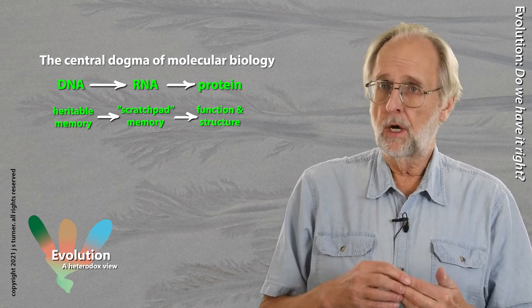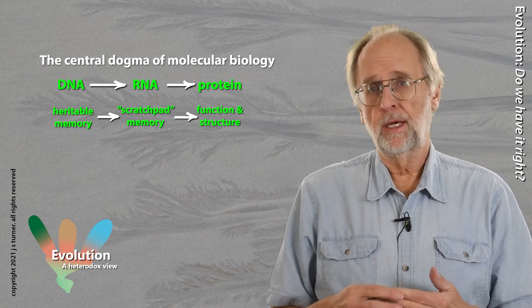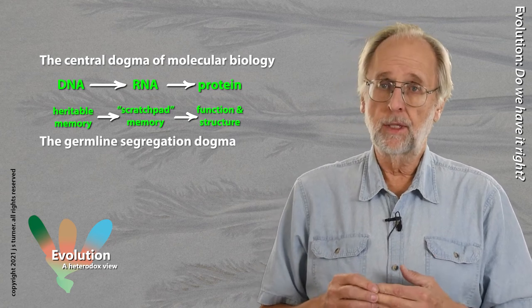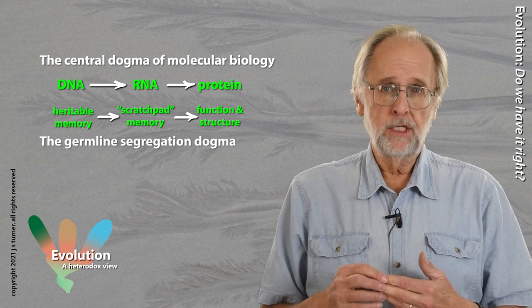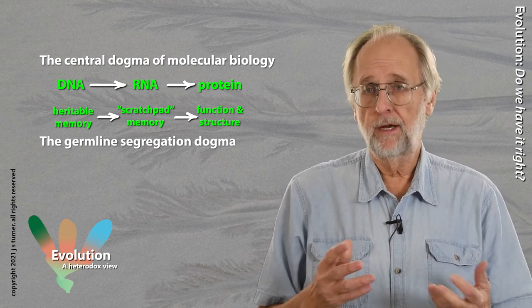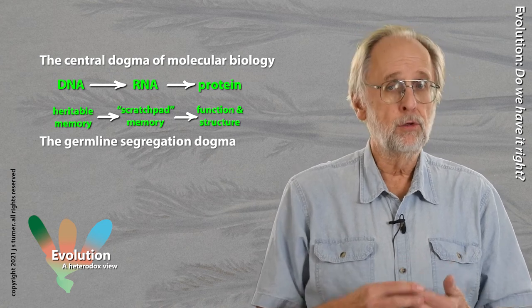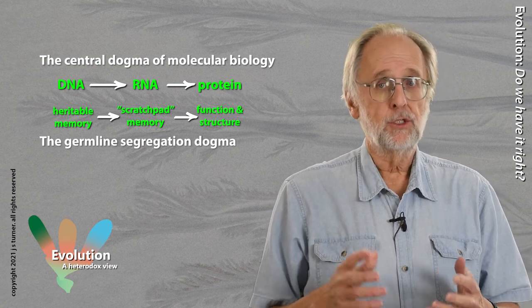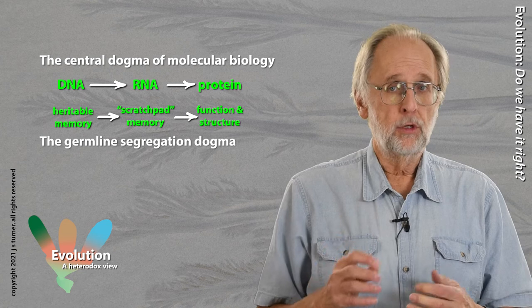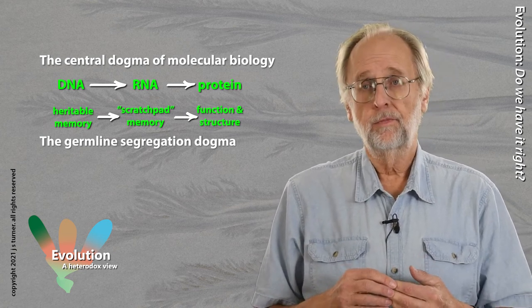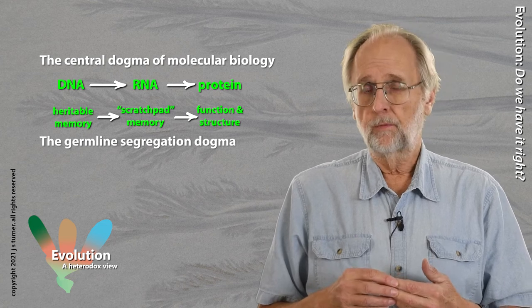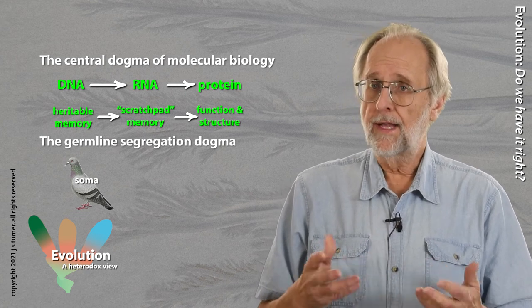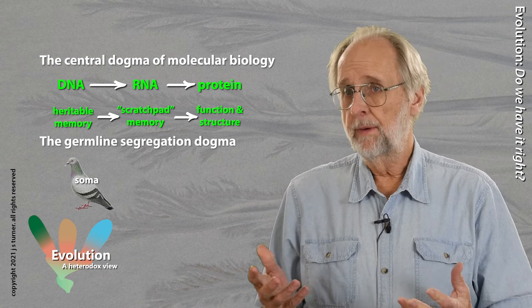There's another important dogma that actually predated the central dogma by several decades: August Weismann's germline segregation dogma. We've already met August Weismann as the person who determined that heritable memory, whatever it was, had to be carried on the chromosomes. Weismann's germline is a lineage of cells that connects one generation to another — the germline is the lineage, in other words. Imagine you have a light-colored pigeon. The body of the pigeon is called the soma — that's the part that eats, flies around, mates, and so forth.